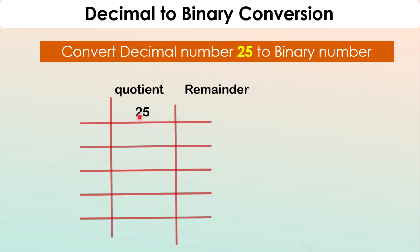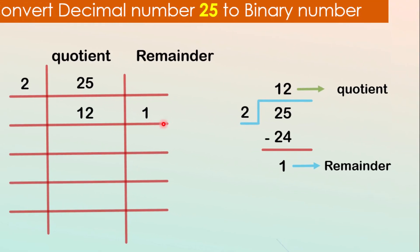Each time, we divide the quotient by 2 and write down the remainders on the right side, until the quotient reaches 1. We start by dividing 25 by 2. 25 divided by 2 gives 12 as the quotient and a remainder of 1. We write down the remainder. It's just like a simple division, where 25 is the dividend, 2 is the divisor, 12 is the quotient, and 1 is the remainder.